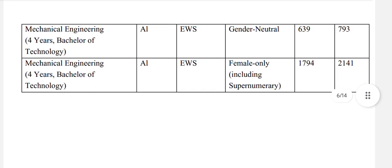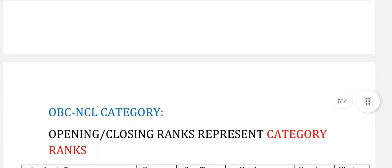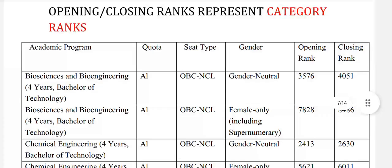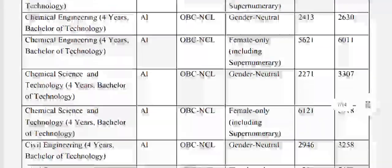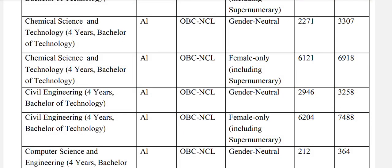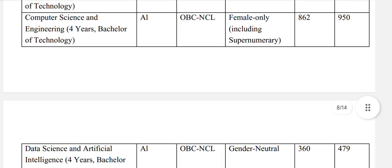Mechanical Engineering, EWS gender-neutral: 793, and EWS female: 2141. Now let's see the data for OBC-NCL. The opening and closing ranks represent category rank. Bioscience and Bioengineering, OBC gender-neutral: 4050. Chemical Engineering, OBC gender-neutral: 2630. Chemical Science and Technology, OBC gender-neutral: 3307. Civil Engineering, OBC gender-neutral: 3258. Computer Science and Engineering, OBC gender-neutral: 364, and OBC-NCL female: 950.